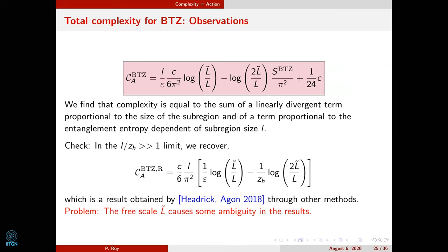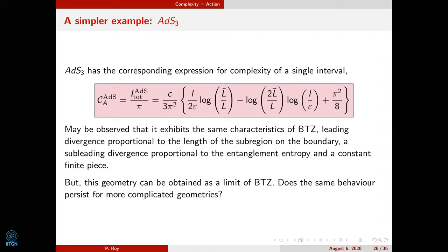This represents a compact relationship between complexity and entanglement entropy. Going through the same exercise for pure ADS_3 yields an expression exhibiting the same characteristics as BTZ: a divergence proportional to the boundary sub-region length, a subleading divergence proportional to the entanglement entropy, and a constant finite piece proportional to the central charge. However, since this geometry can be obtained as a limit of BTZ, one might ask whether this general structure persists. For more complicated geometries, this behavior is unfortunately not preserved.